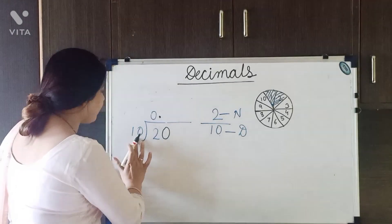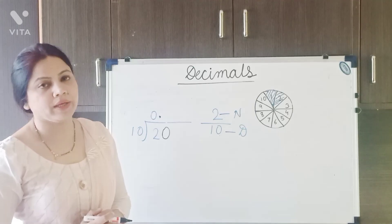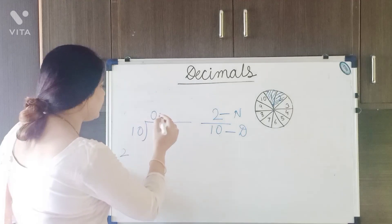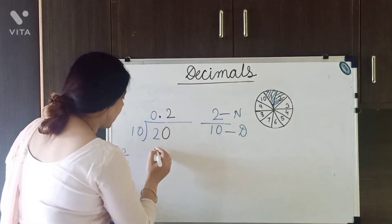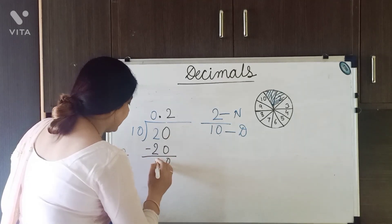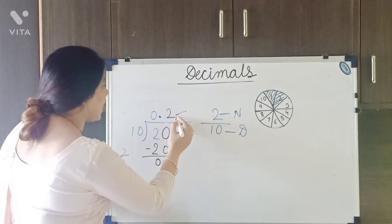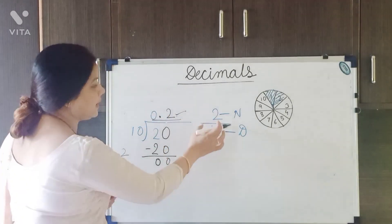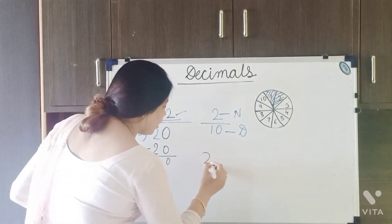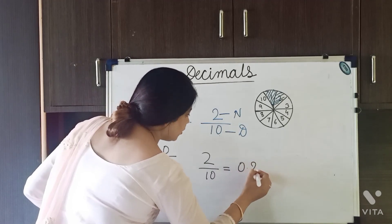Now, can we find 20 in the table of 10? Yes. 20 appears in the table of 10 at 2 times. So we write 2 in the quotient and 20 below, subtract to get 0. So 2 upon 10 can be written as 0.2.